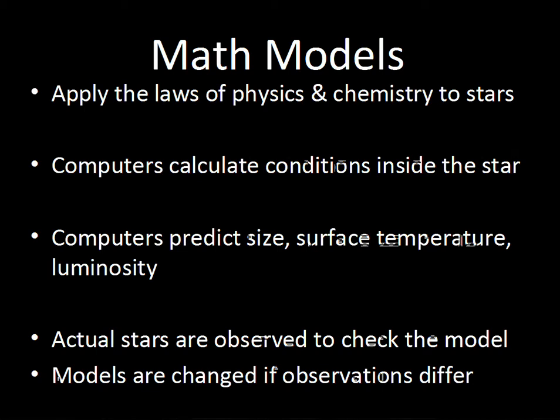The models are run and produce output data. To verify these computer models — which are in a sense like hypotheses — actual stars are observed and compared to the model predictions. It has been found that computer models are good at predicting the sizes, surface temperatures, and luminosities of stars. The initial models were refined and changed to match the data from actual stars.